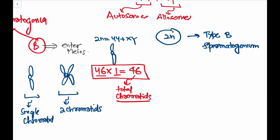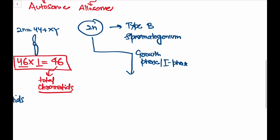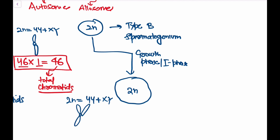This Type B spermatogonium then enters interphase (the growth phase), during which DNA duplication takes place. The cell becomes larger but is still diploid — 2n = 44 + XY — because the nucleus and cytoplasm have not yet divided. After DNA replication, each chromosome now has two chromatids, so total chromatids = 46 × 2 = 92.